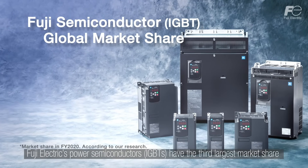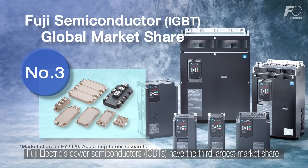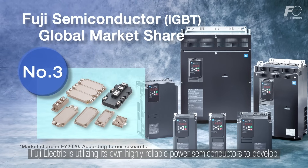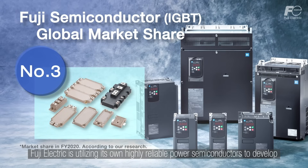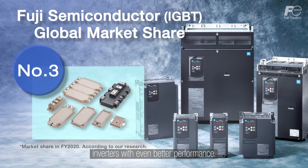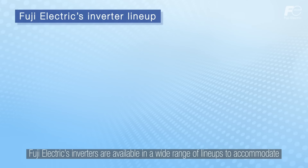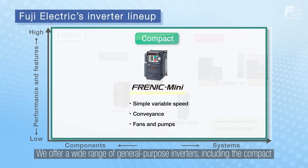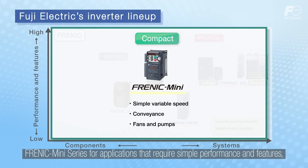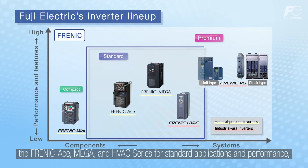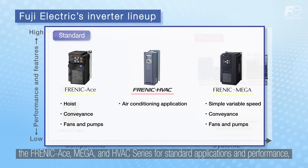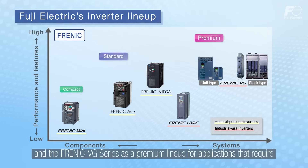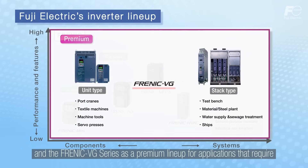Fuji Electric's power semiconductors — IGBTs — have the third largest market share in the world. Fuji Electric is utilising its own highly reliable power semiconductors to develop inverters with even better performance. Fuji Electric's inverters are available in a wide range of lineups to accommodate various applications and performance needs. We offer a wide range of general purpose inverters, including the compact Phrenic Mini Series for applications that require simple performance and features, the Phrenic Ace, Mega and HVAC series for standard applications and performance, and the Phrenic VG series as a premium lineup for applications that require high performance and features.